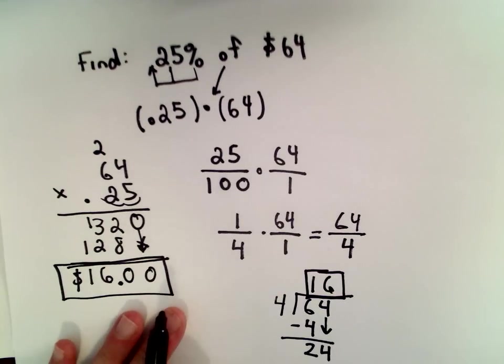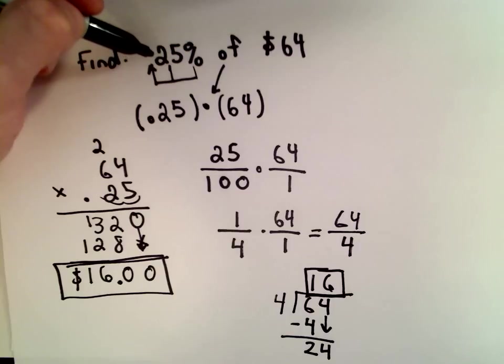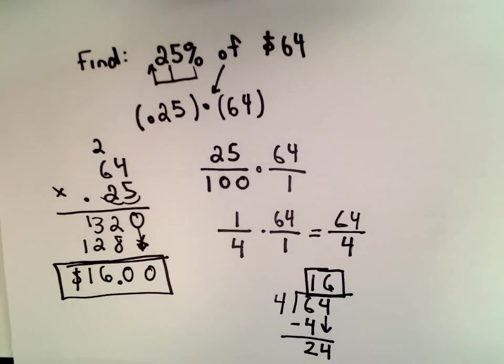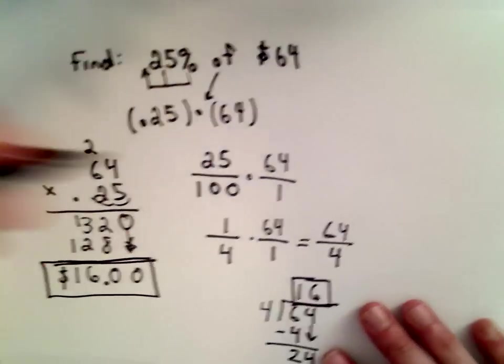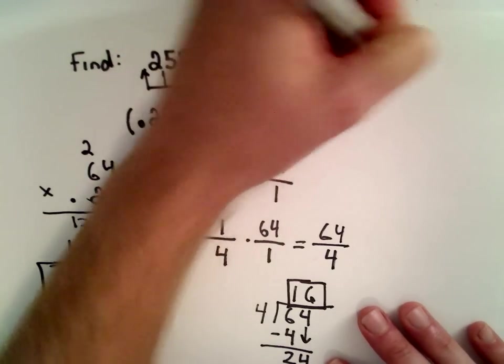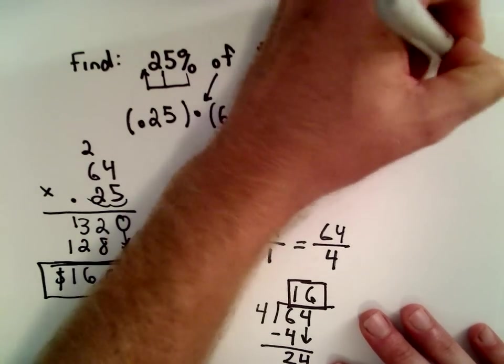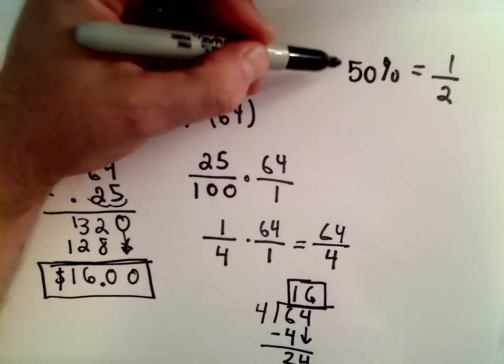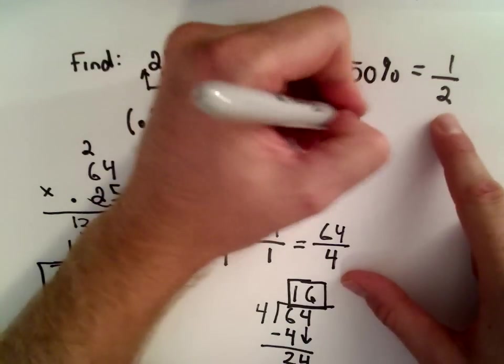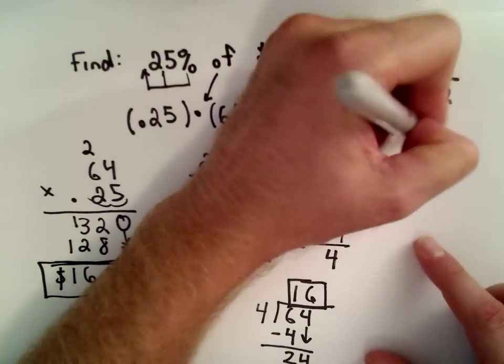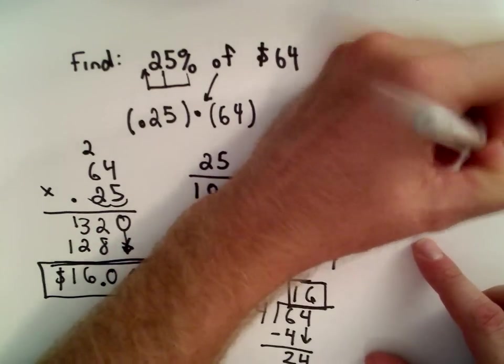Last but not least, the way I would actually do this mentally in my head, and the reason why I could do this easily in my head is because it's 25%. If this was, say, 23%, or 24%, or 26%, I wouldn't be able to do it. But the idea is 50%, that's the same thing as one half, right? If it's 50% off, it's half off. So, half of 64, well, that would be 32.